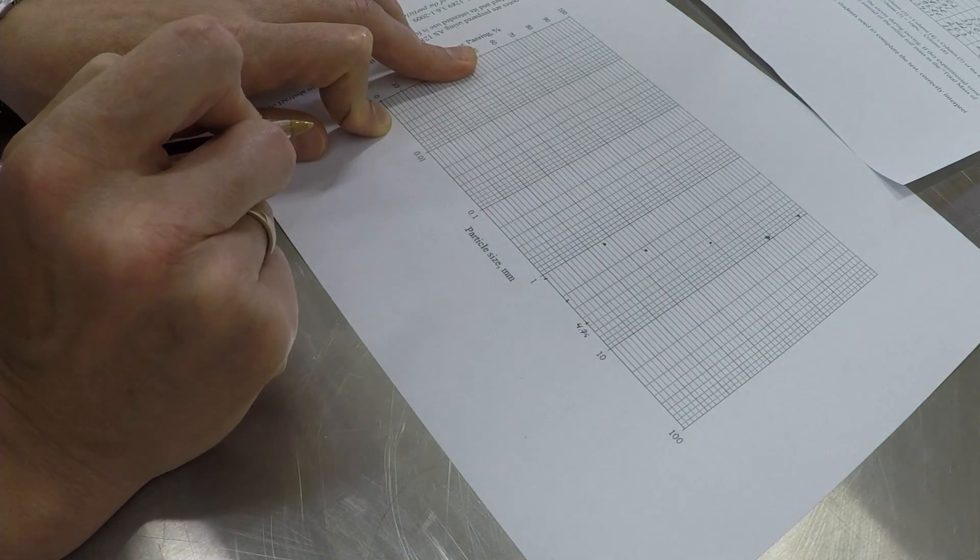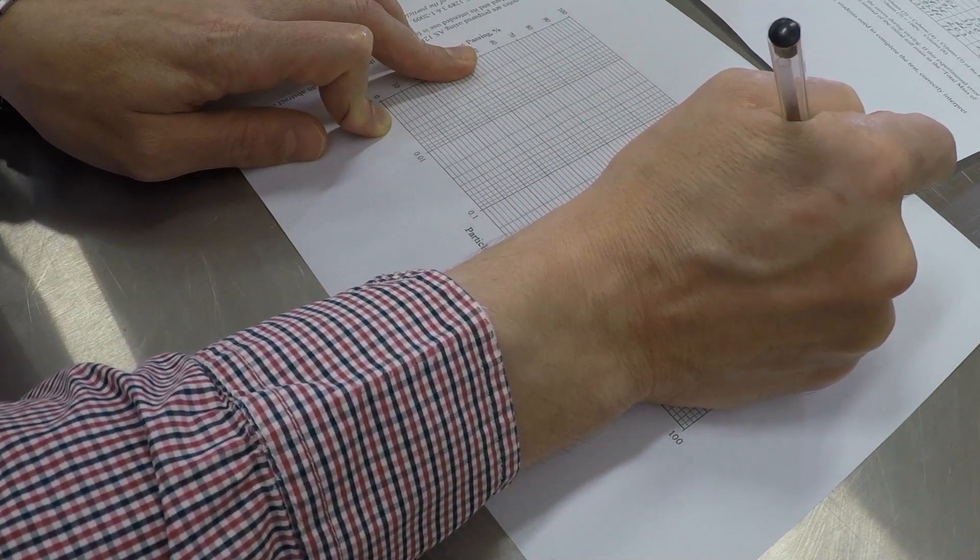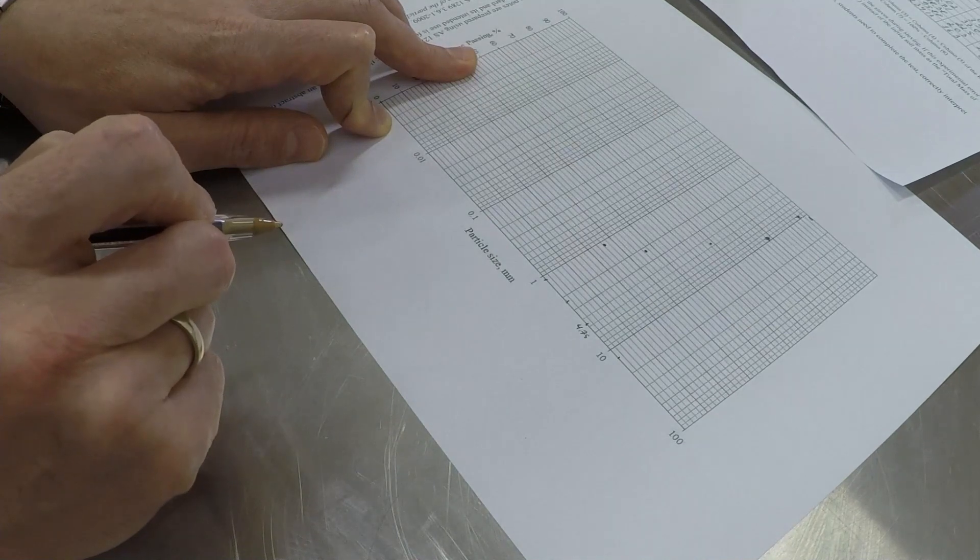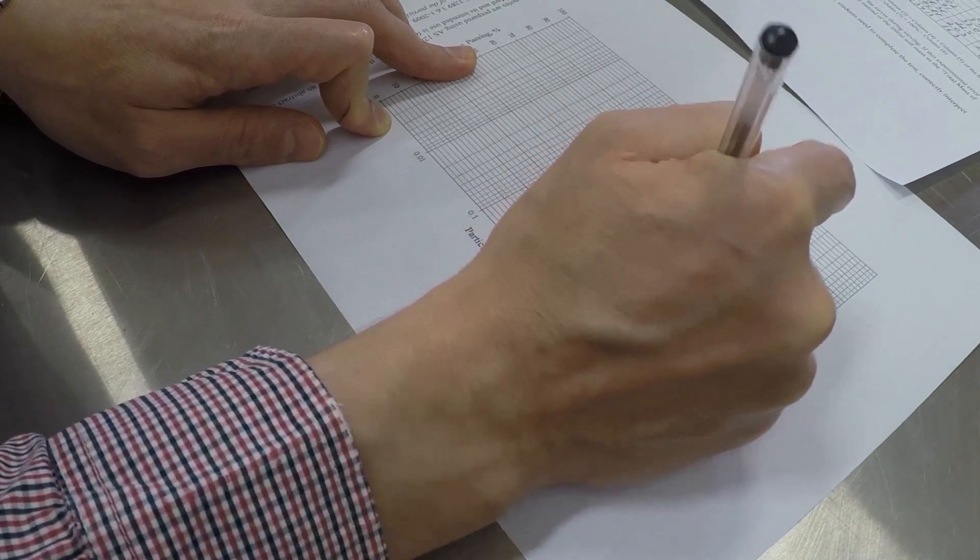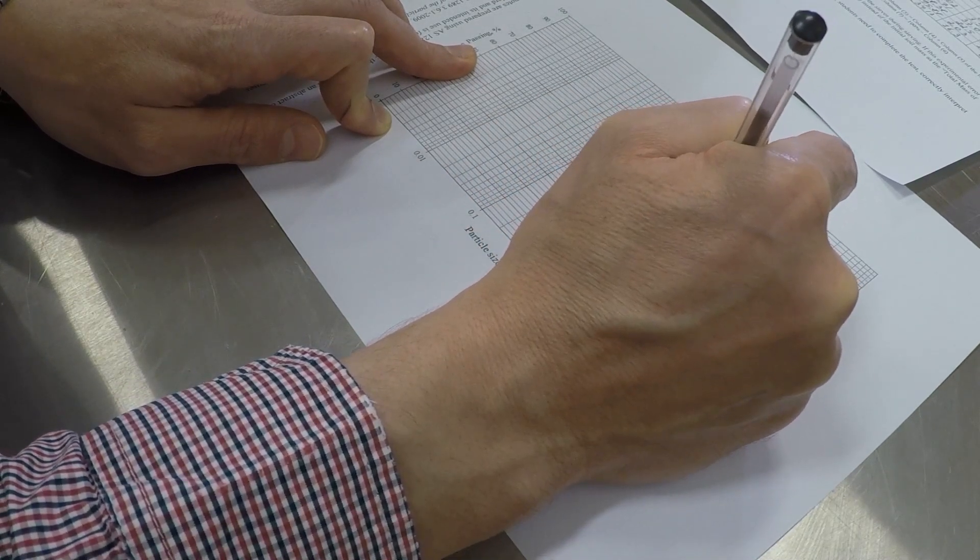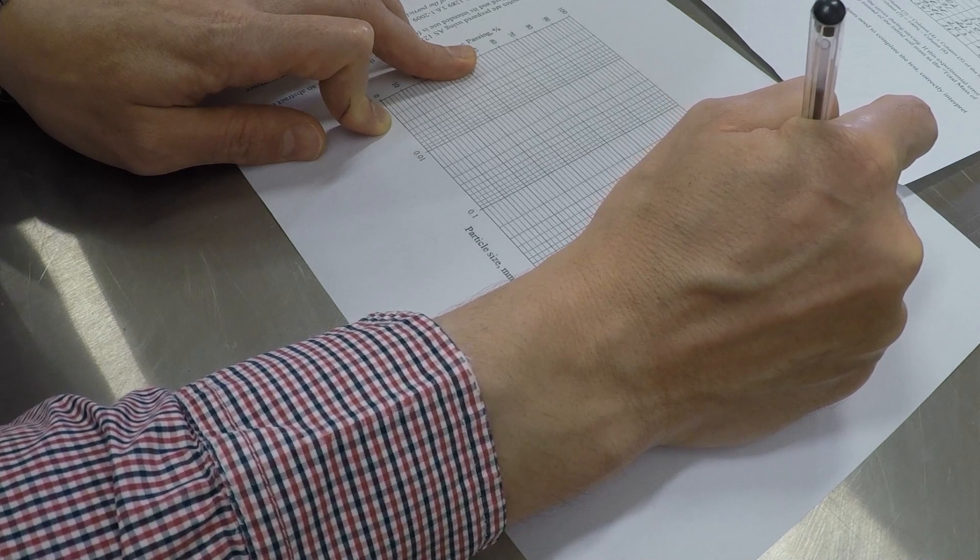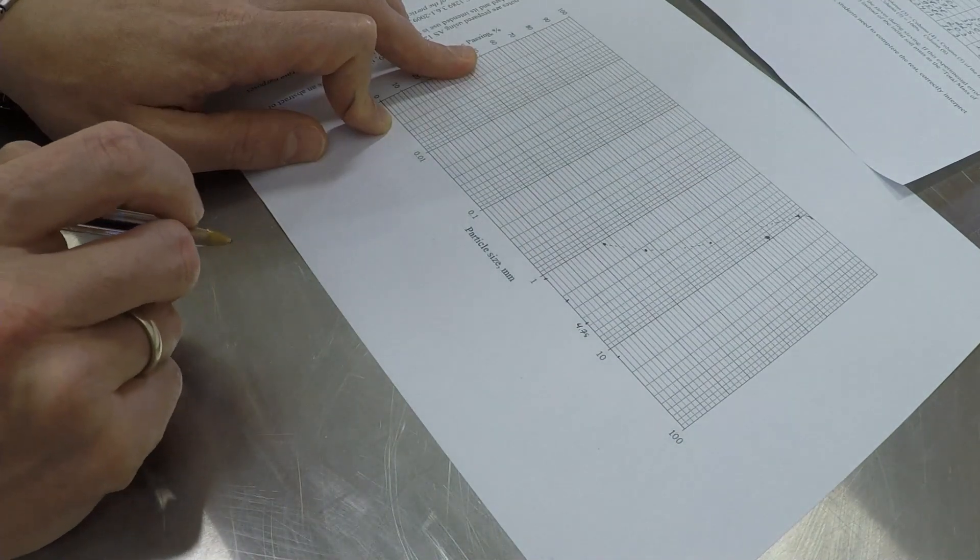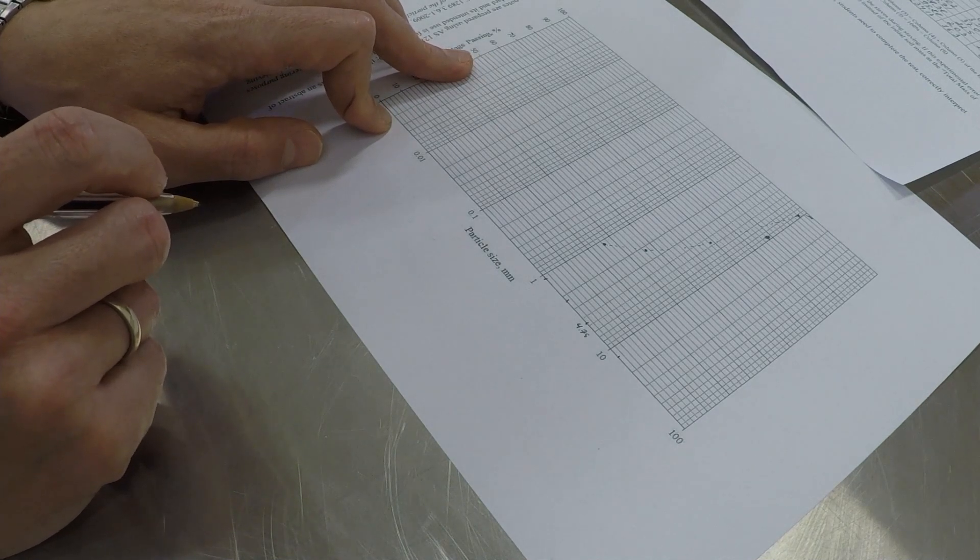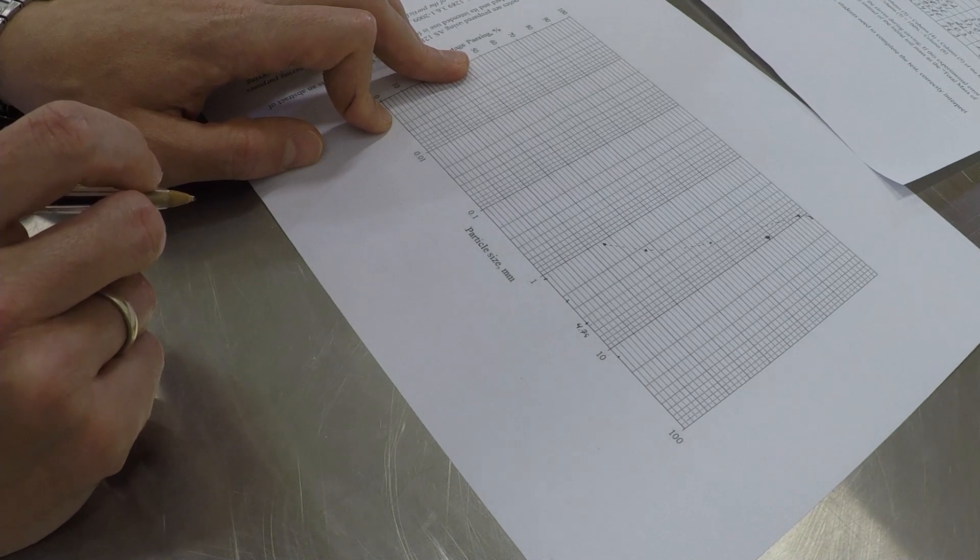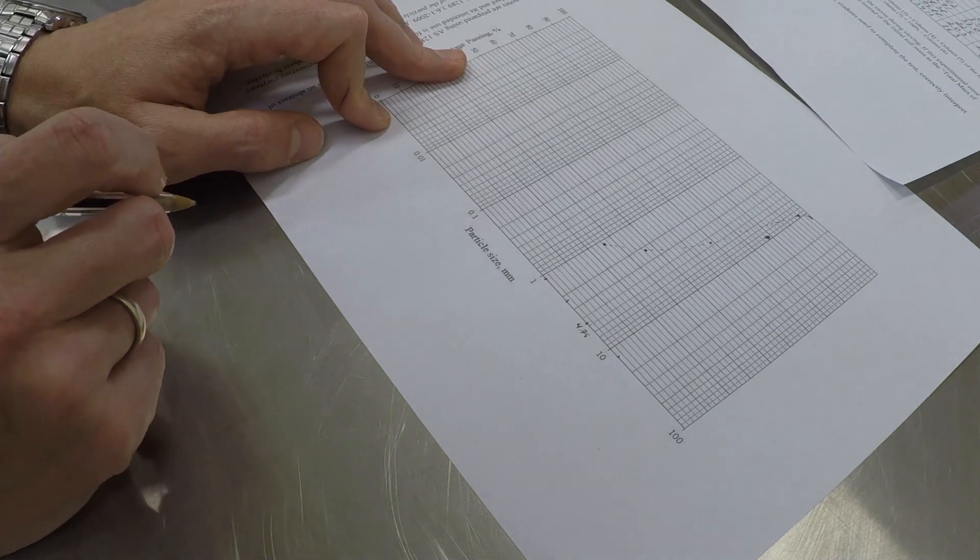And next, sieve size is 13.2, we have hundreds. So these are the points we can connect them. So that will have grain size distribution curve. What you can do is you can draw it by hand manually, or you can use any software like Microsoft Excel. You can put all your data in Microsoft Excel spreadsheets, and then just draw a curve using one of their functions. That's it. Thank you.